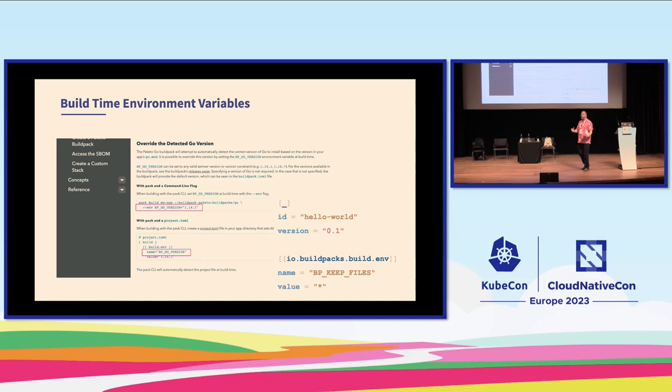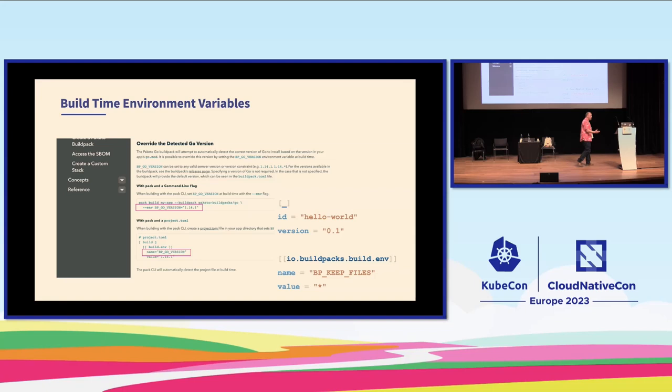I'm also using the BP_KEEP_FILES environment variable from the Paketo documentation. Normally the Go buildpack reads the Go source, compiles the binary, and doesn't put the Go source on the output image. But if I'm building a polyglot image with both Go and TypeScript source code, I'll want to keep all those files on the output image. Using BP_KEEP_FILES lets me keep all that TypeScript on my output image.